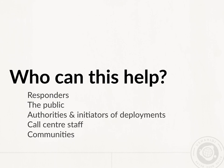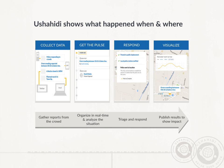Ushahidi has been focused on providing equal access to resources for people to effectively respond to problems in their communities. We have built an open source technology platform that enables you to gather reports from the crowd, organize it in real time, and analyze the situation. It also allows you to triage and respond to this information so that you're able to close out the loop, and publish the results to visualize the impact.